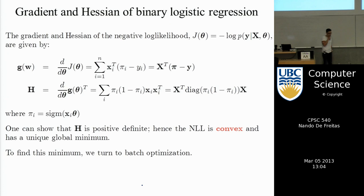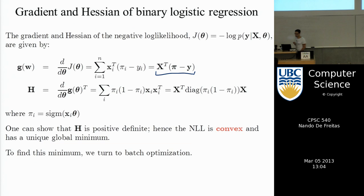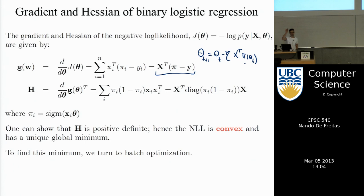This is your homework question: take that cost function j of theta, differentiate it with respect to theta, and you will get the expression for the gradient. If you're doing gradient descent, your update will be theta_{t+1} equals theta_t minus the learning rate times the gradient: x transpose times (pi of theta_t minus y_t). Pi is the sigmoid — 1 over 1 plus e to the minus theta x.